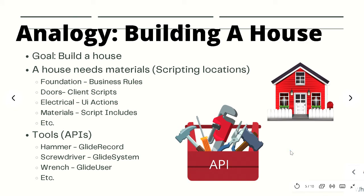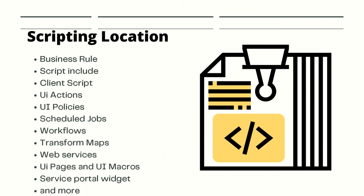To help solidify your understanding of what an API is, let's go over an analogy. Our goal is to build a house. To build a house we need materials — this can be thought of as scripting locations — such as the foundation, doors, electrical, and other materials. In addition to materials, we also need tools to help us construct the house. The tools integrate all these components and create the house, which you can consider as the project. So we can think of these tools as the APIs available to us — Glide Record API acting as a hammer, or Glide System API acting as a screwdriver, and so on.